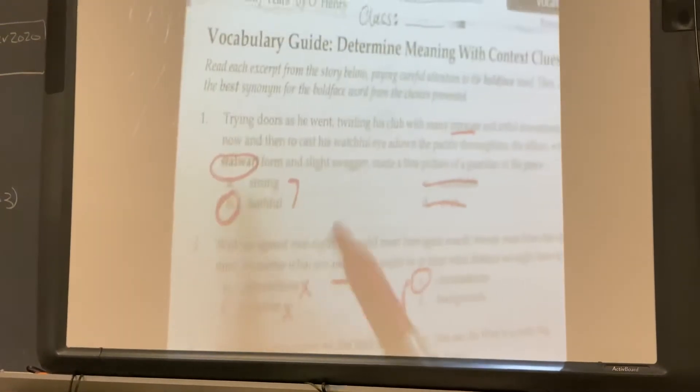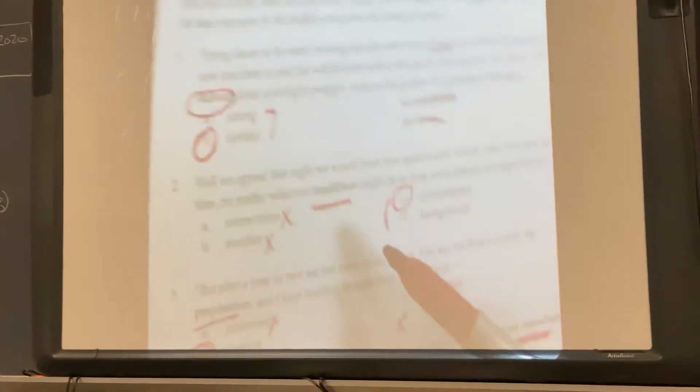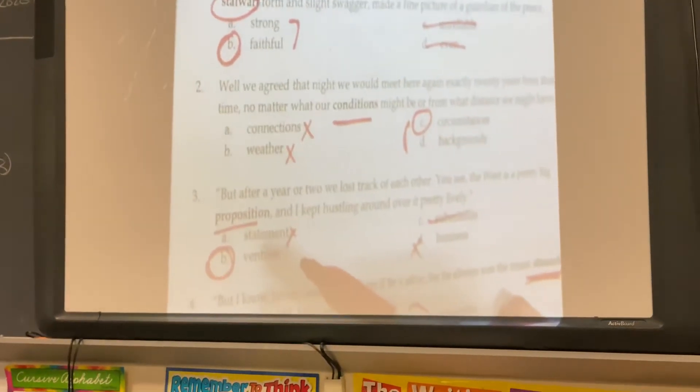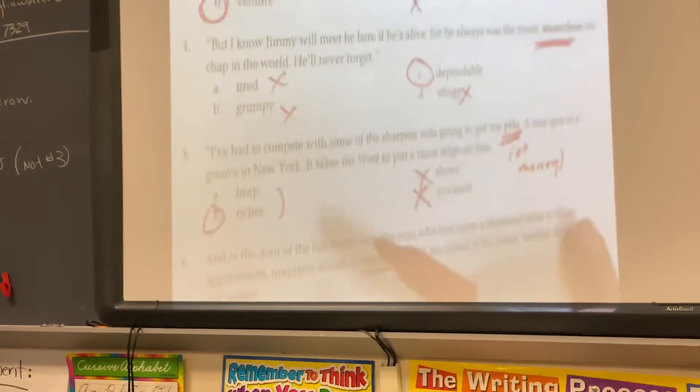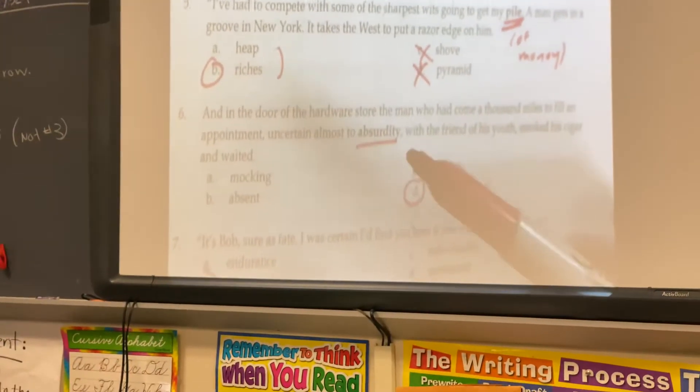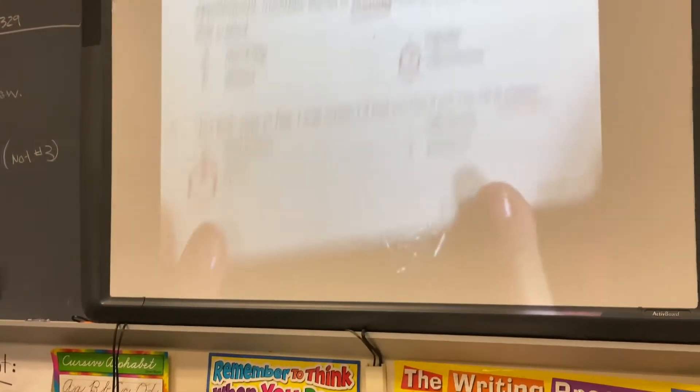So to review, one is B, two is C, three is B, four is C, five is B, six is B, seven is B. And then on the back, eight.